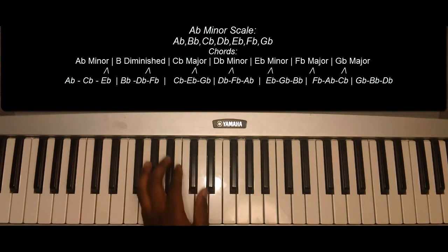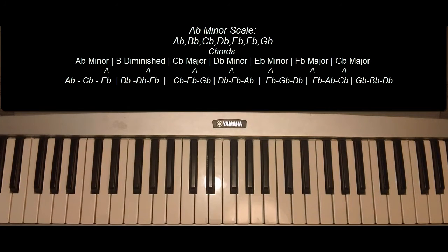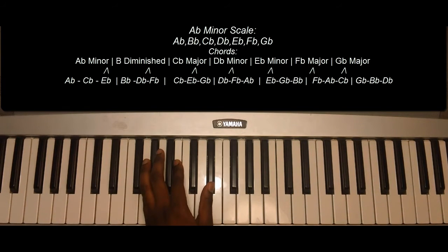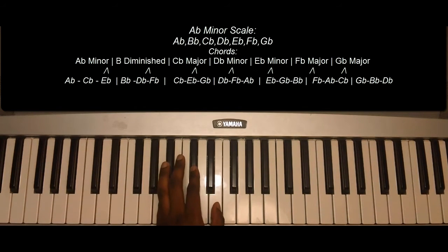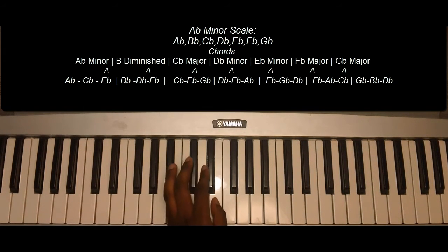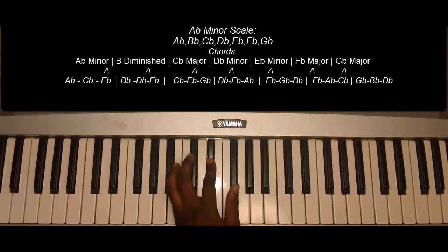The first chords in the A-flat minor scale. Chord one: A-flat minor — A-flat, C-flat, E-flat. Chord two: B-flat diminished — B-flat, D-flat, F-flat.